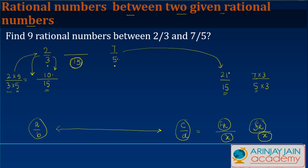Any number which lies between this 10 and 21 as the numerator and the denominator being 15 is going to lie between these two given numbers. So it could be 11/15, 12/15, 13/15, 14/15...